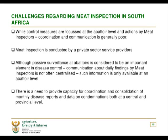Regarding challenges of meat inspection in South Africa: while control measures are focused at the abattoir level with action by meat inspectors, coordination and communication is generally poor. Meat inspection is currently conducted by private sector service providers — hence the move toward independent meat inspection, which is in the pipeline. Although passive surveillance at abattoirs is an important element in disease control, communication about daily findings by meat inspectors is not often centralized. Such information is only available at the abattoir level, and there is a need for capacity to consolidate monthly disease reports and condemnation data at both central and provincial level.